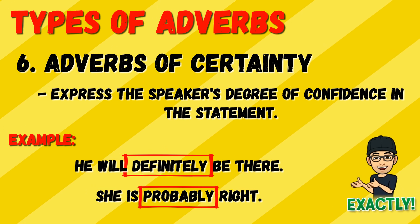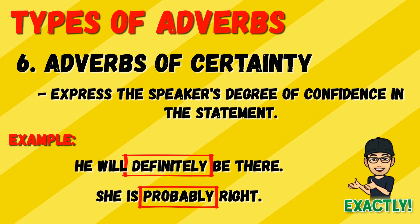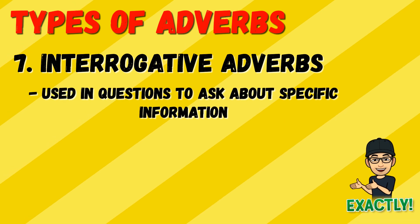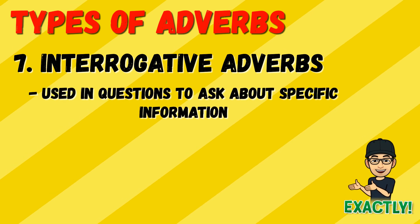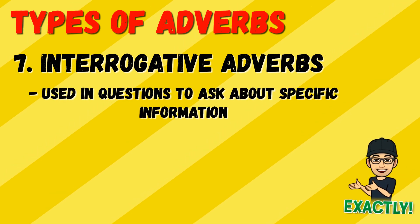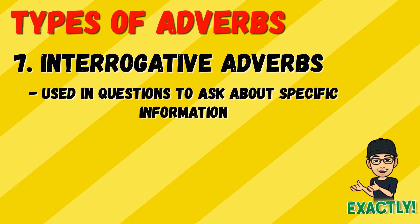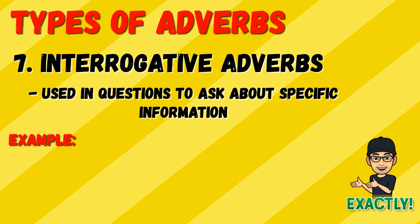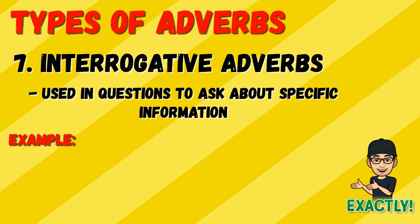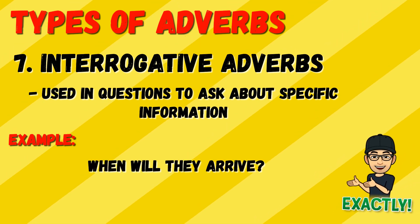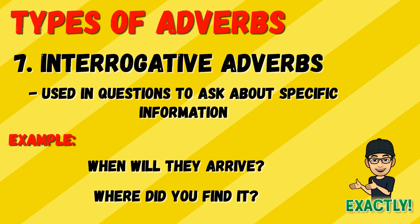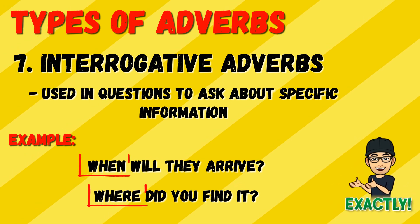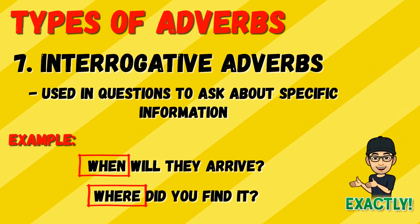The last type is interrogative adverbs. These adverbs are used in questions to ask about specific information. For example: 'When will they arrive?' and 'Where did you find it?' Basically, these adverbs are used to form questions.